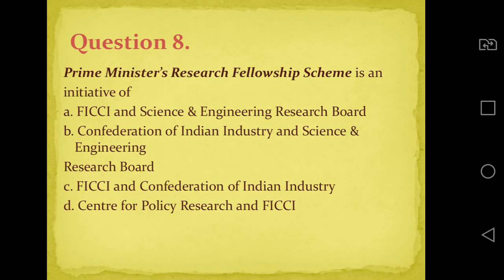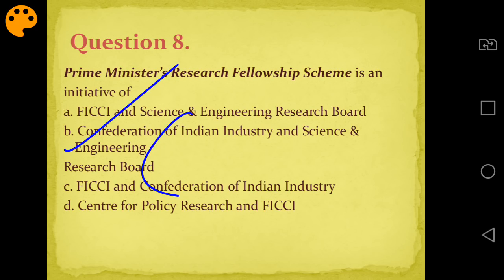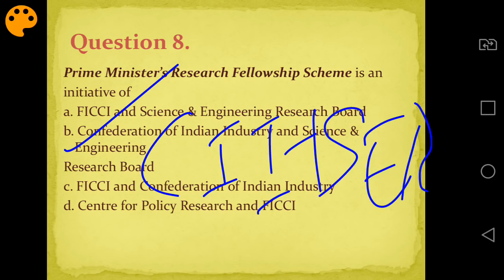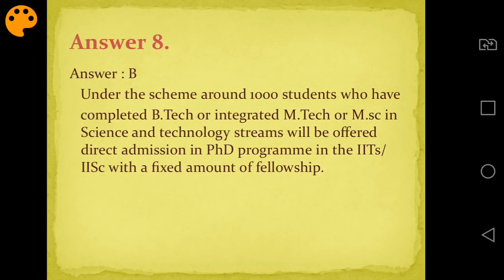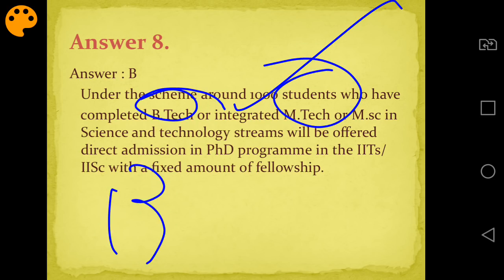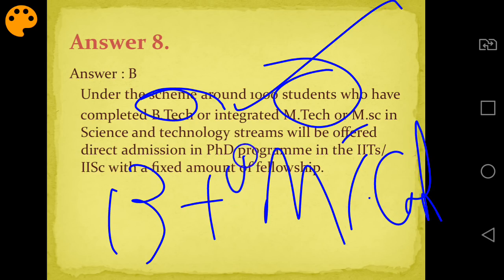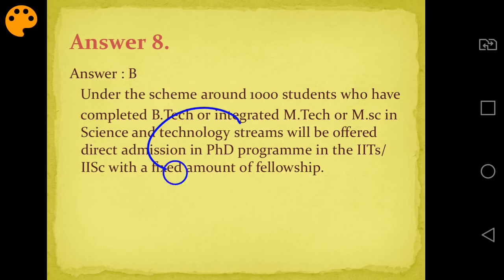Question number eight: Prime Minister Research Fellowship Scheme is an initiative of which combination? Options are FICCI and SERB, CII and SERB, FICCI and CII, or Centre for Policy Research and FICCI. Answer is B - CII and SERB. Under this scheme, approximately 1000 students who have done B.Tech and M.Tech will be given direct PhD admission in IITs and IIScs.